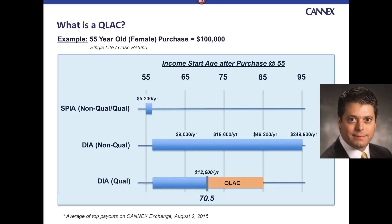What the government did is recognize the benefit that these types of contracts can have and essentially allowed you to defer that income start date up to age 85. If you apply a portion of the client's assets into a qualified DIA, you can essentially achieve a similar benefit at 85 — a little bit more than $49,000 per year for that $100,000 original investment.